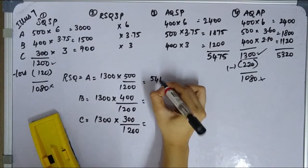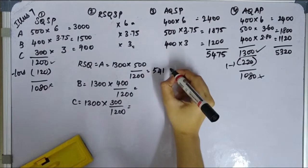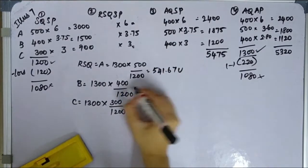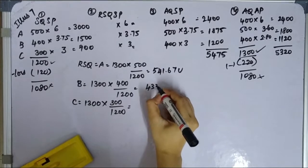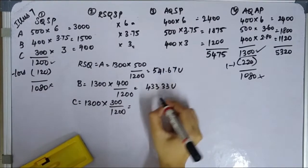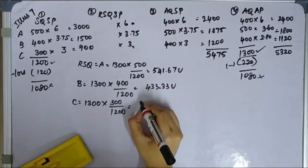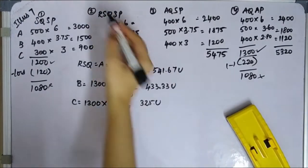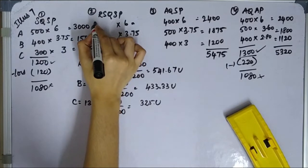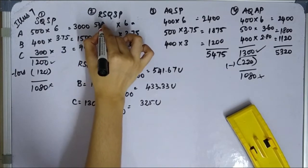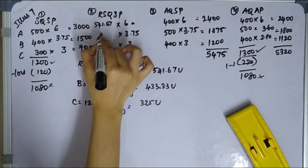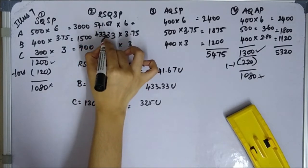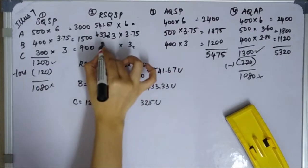So 541.67 units, and for this one is 433.33 units, and this one is 325 units. So 541.67, this one is 433.33, and this one is 325.